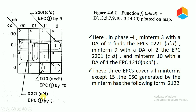The minterm 9 has a degree of adjacency of 2, which produces the essential prime cube (2, 2, 0, 1), that is c̄·d. And the minterm 10 with a degree of adjacency of 1 produces the essential prime cube (1, 2, 1, 0), which represents a·c·d̄ — or simply a·c̄.